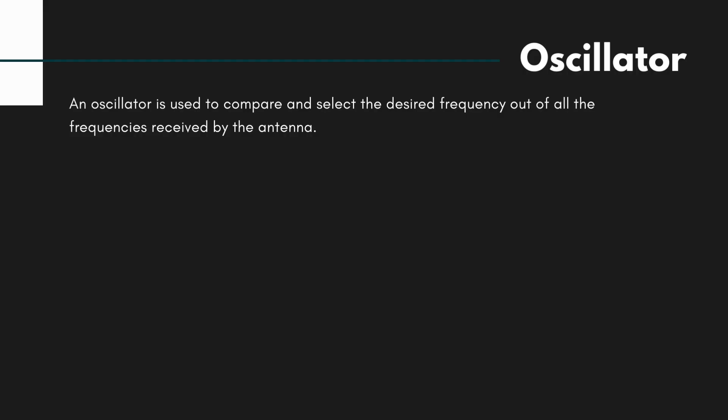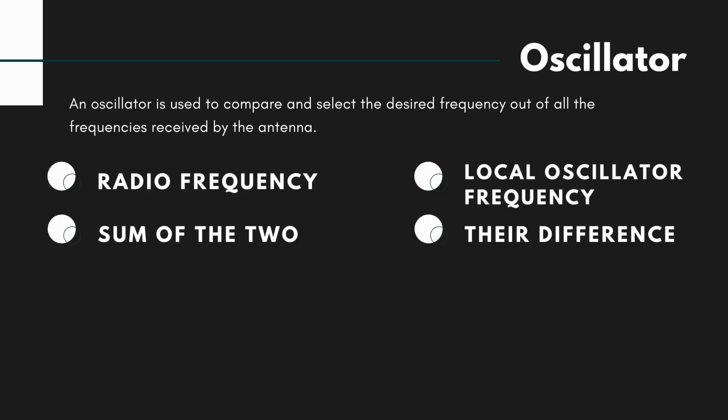An oscillator is used to compare and select the desired frequency out of all the frequencies received by the antenna. This local oscillator produces a different frequency from the radio frequency which is mixed with the received signal by the mixer. So we obtained four different frequencies: radio frequency, local oscillator frequency, sum of these two frequencies and the difference between these two frequencies. Now here is a catch. The sum and the difference of the frequencies contain the information signal. In VHF frequencies, it is 10.8 MHz known as intermediate frequency. This is then amplified and sent to the demodulator where it is separated from the carrier wave.